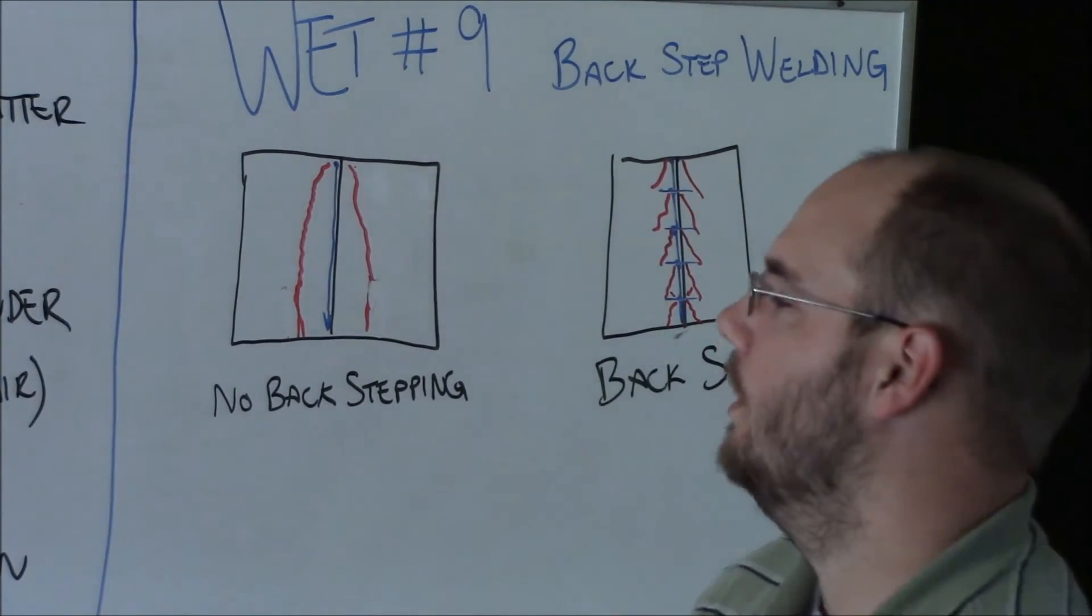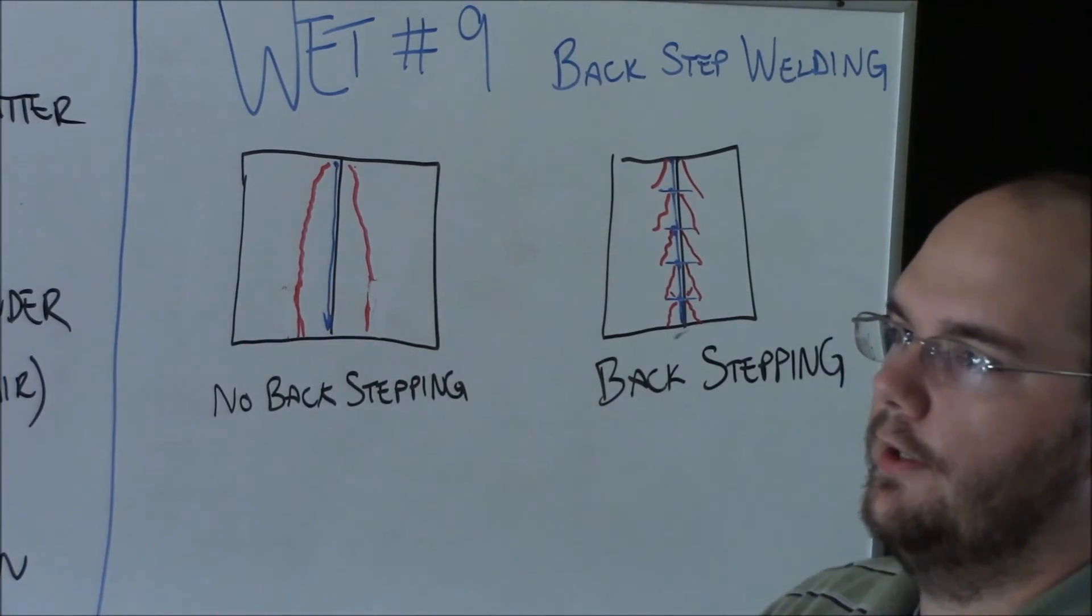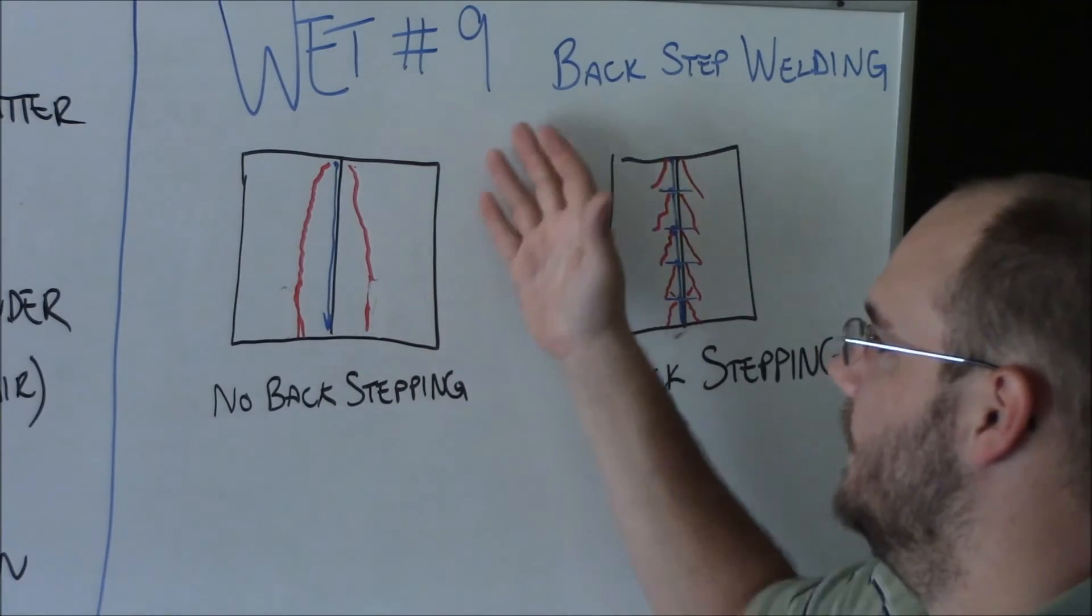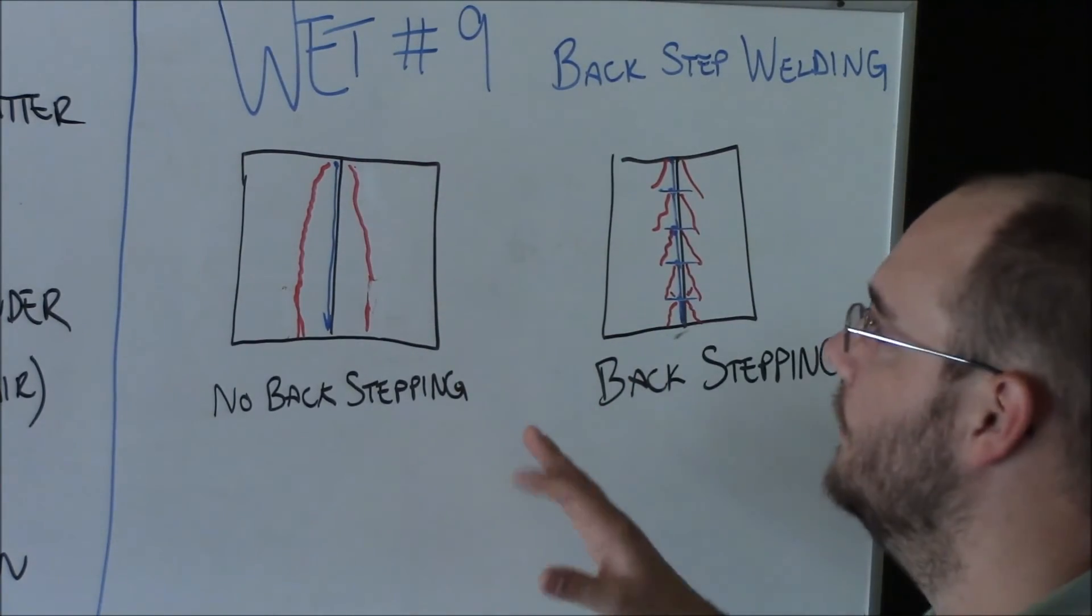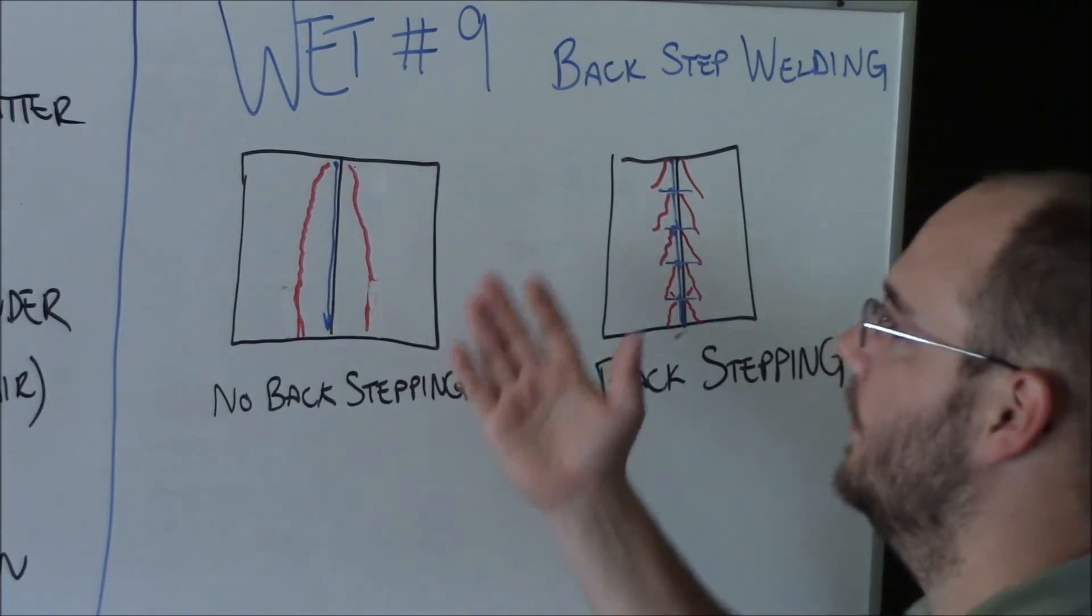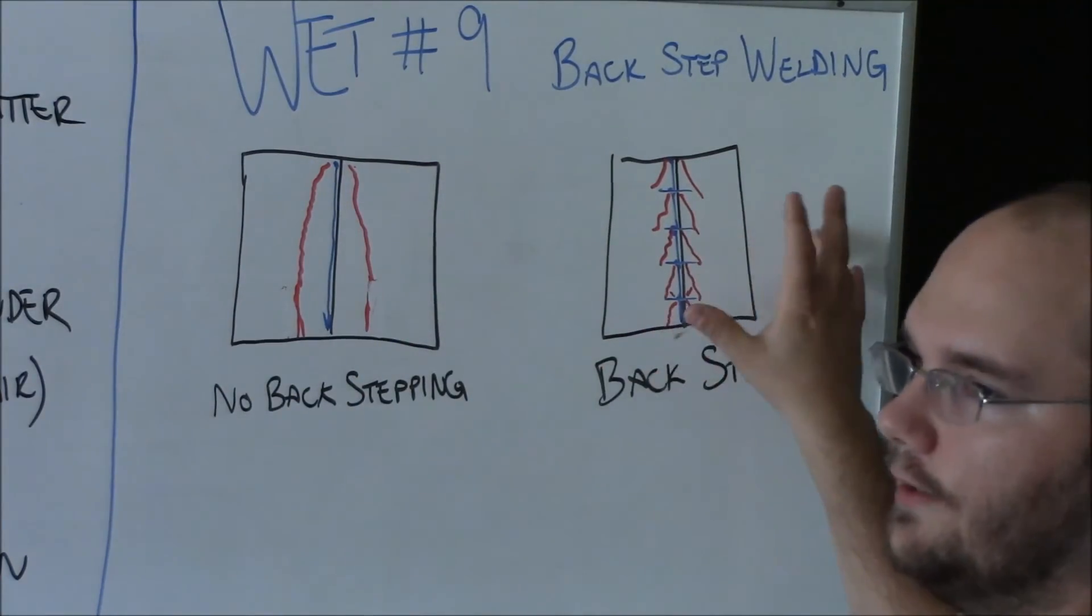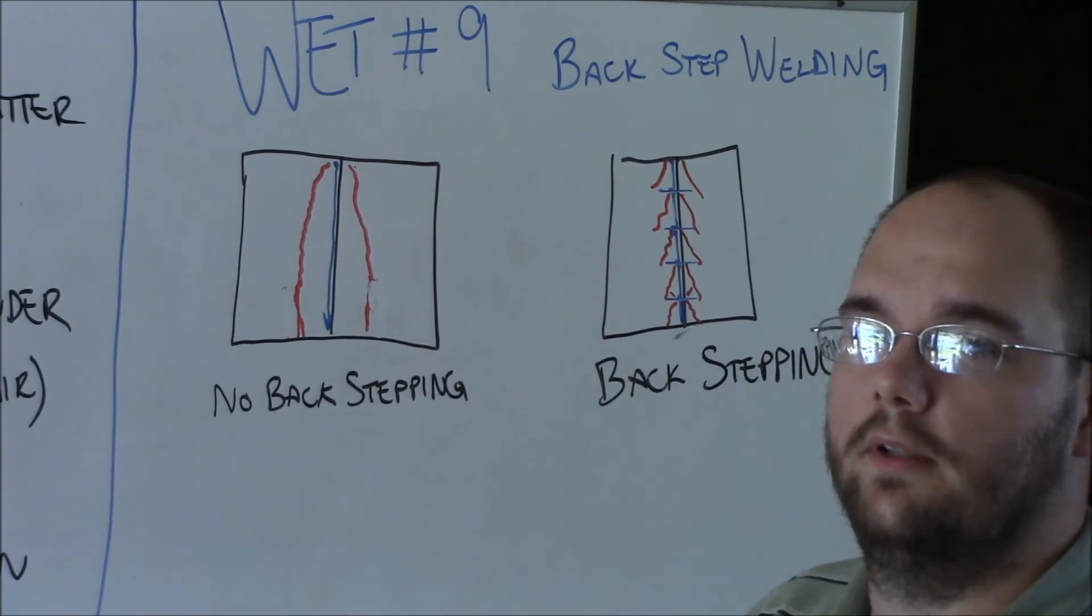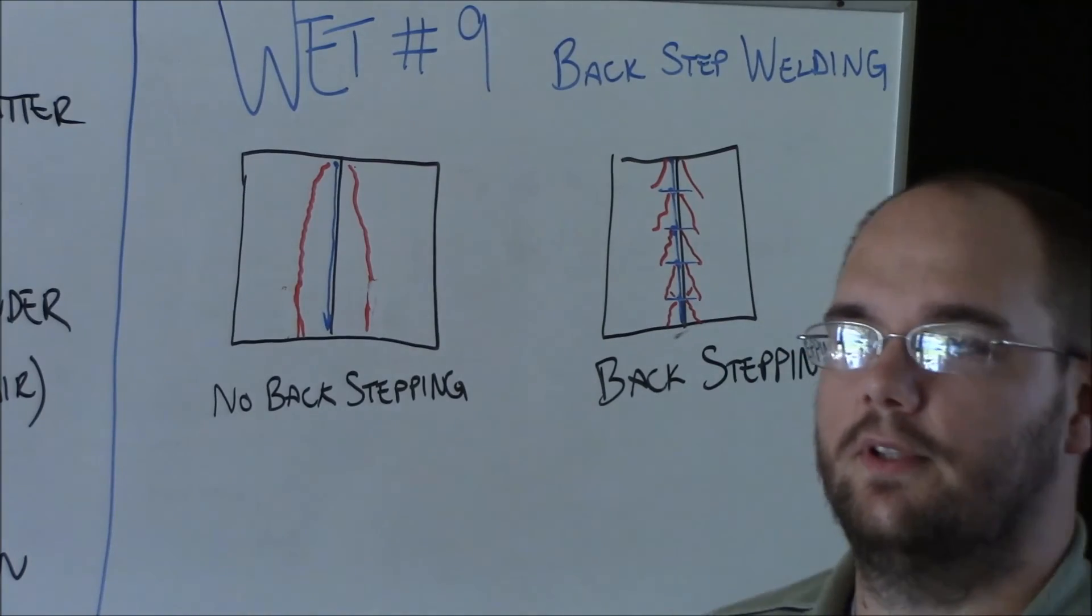And because of that growing out, if you don't have some other measures like clamping or fixturing that's going to restrain this from warping, you're going to end up pulling these plates up, where it's less likely when you use a backstepping method. So again, that's something that's used typically on thin gauge sheet metal.